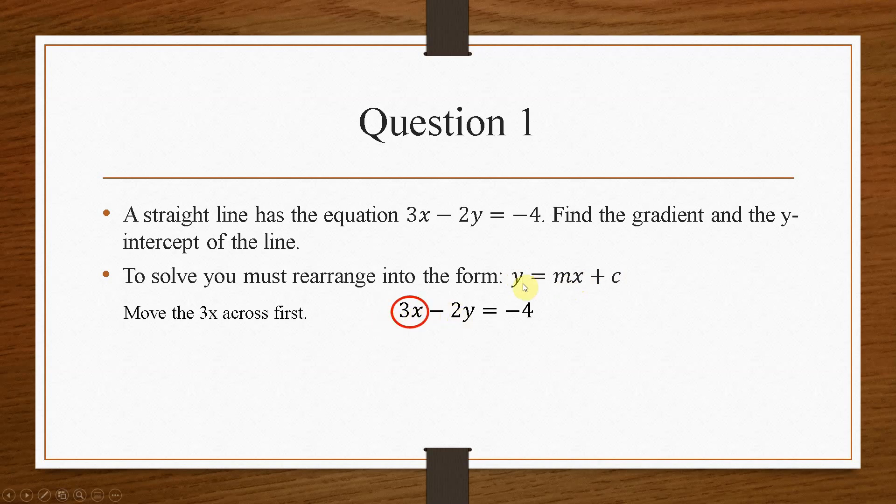So we need to move the 3x and we need to move the minus 2. So we'll move the 3x first, so that will go over as minus. And then we need to move the minus 2. Now because that is multiplying by the y,